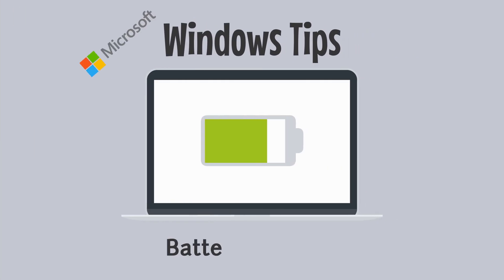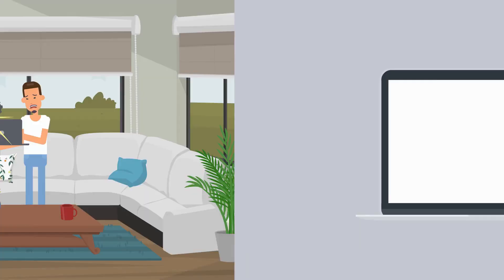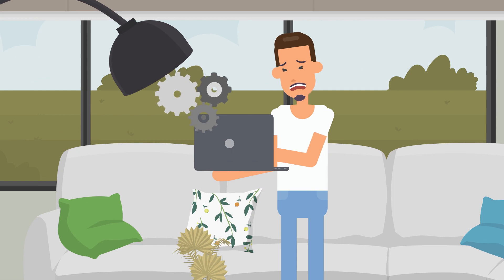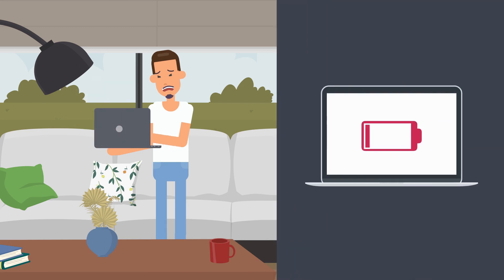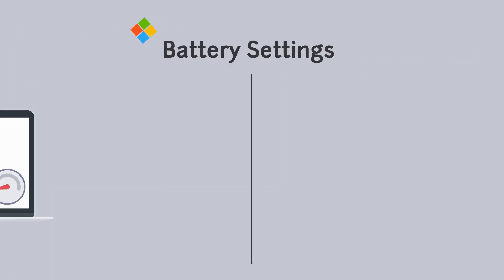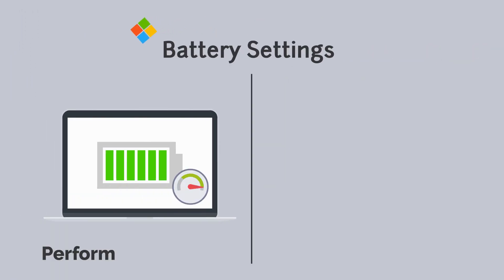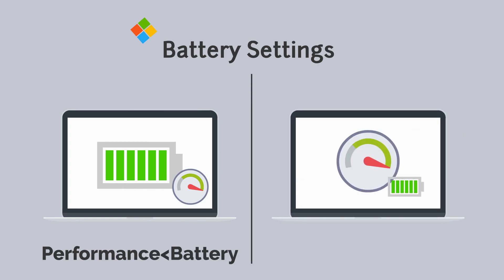Windows Tips: Battery Settings. Do you find your laptop is not performing that quickly, or your battery dies too fast? Believe it or not, they may be related. Windows allows users to limit performance to extend battery life, or vice versa, boost performance by using more power.